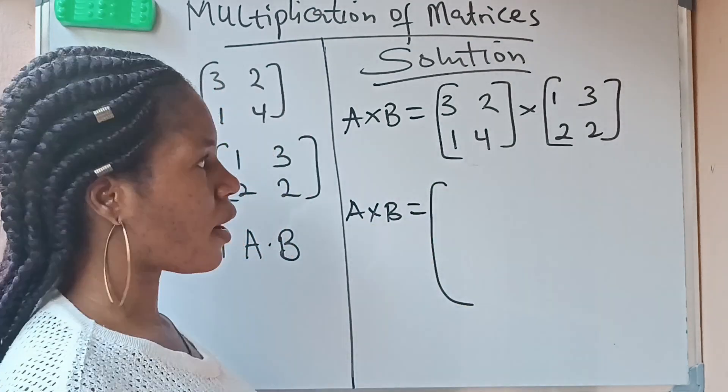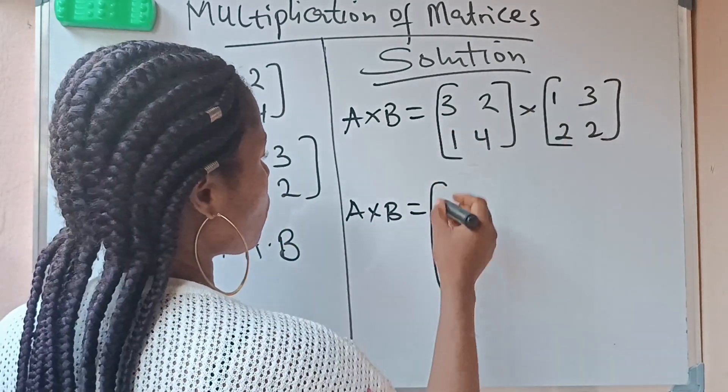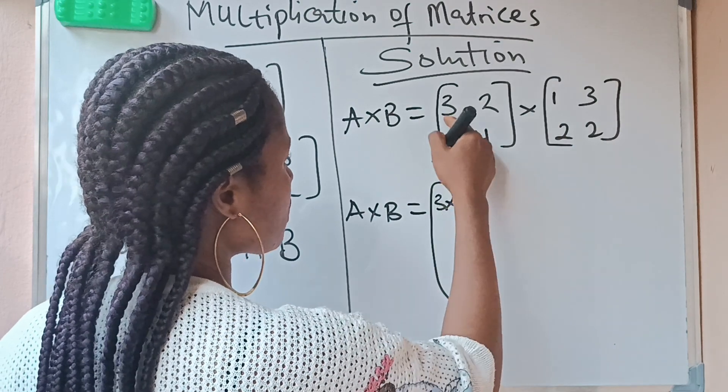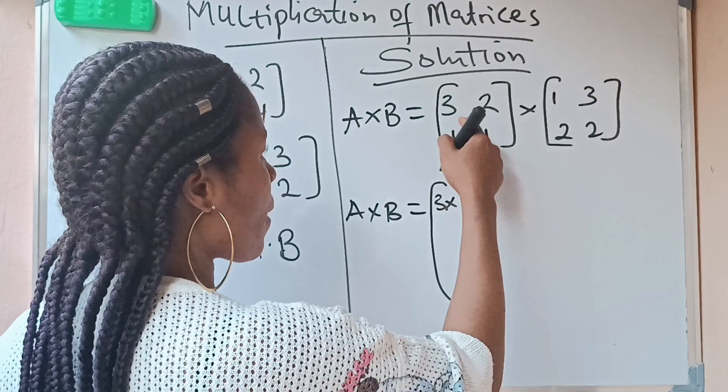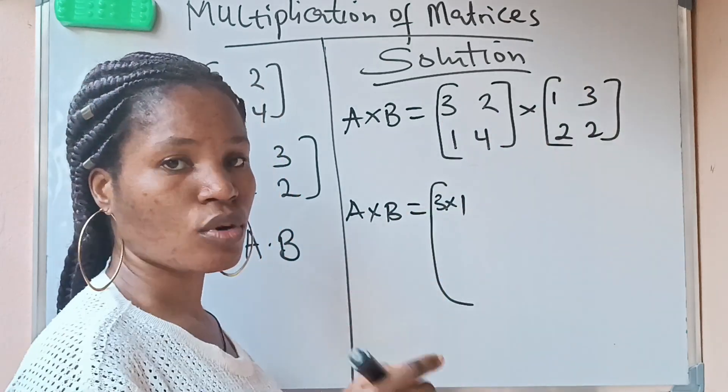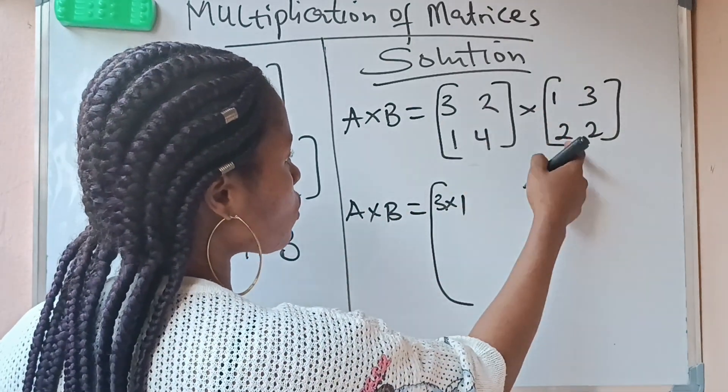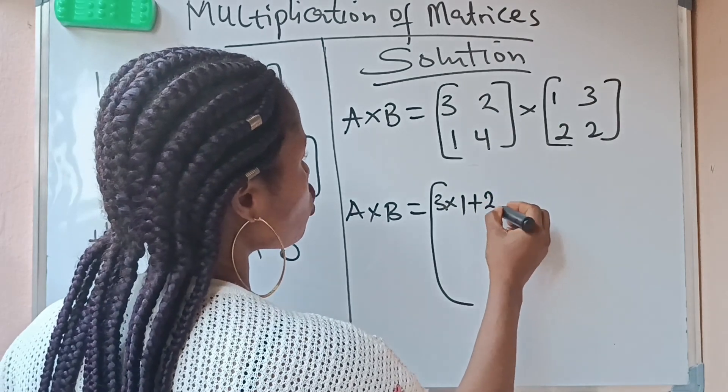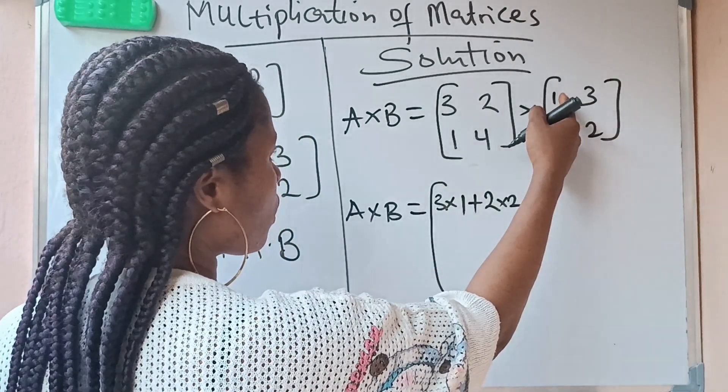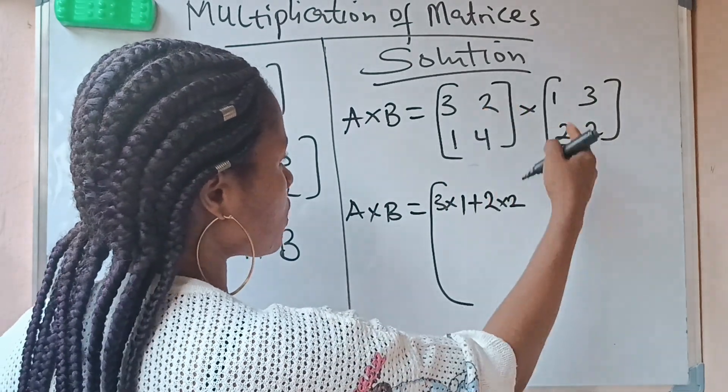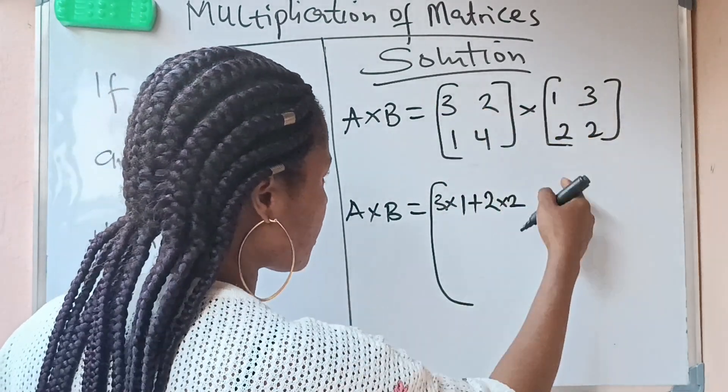3×1, I'm using this row now. 3×1—remember I'm going to use the row against the column. Now 2 will go to these: plus 2×2. So 3×1 + 2×2.